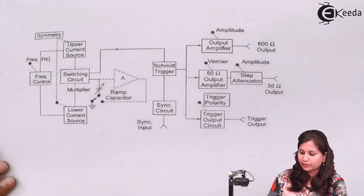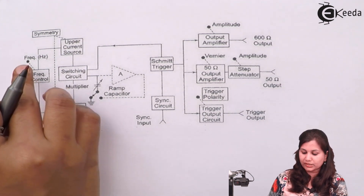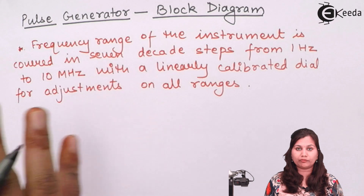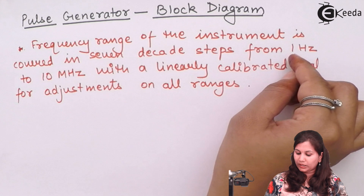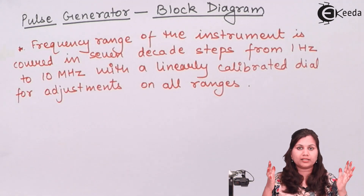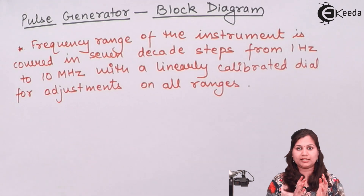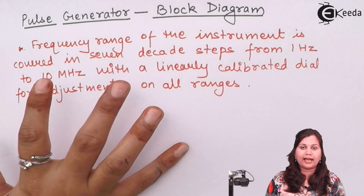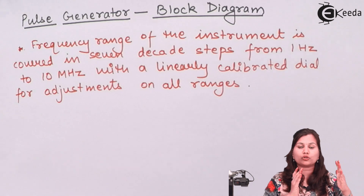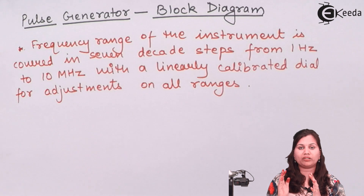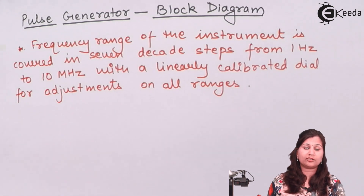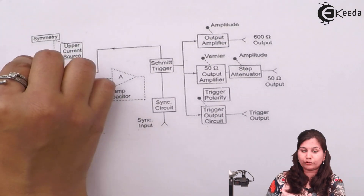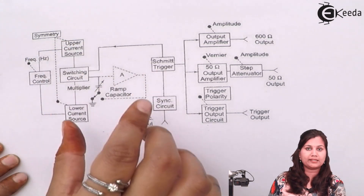Starting from the frequency control on the left side: this frequency controller can cover the frequency in 7 decade steps between the range 1 Hz to 10 MHz. Each step has a frequency range of 100 Hz and can be adjusted with a linearly calibrated dial. On the front panel we have a frequency control knob to adjust the frequency in the circuit.